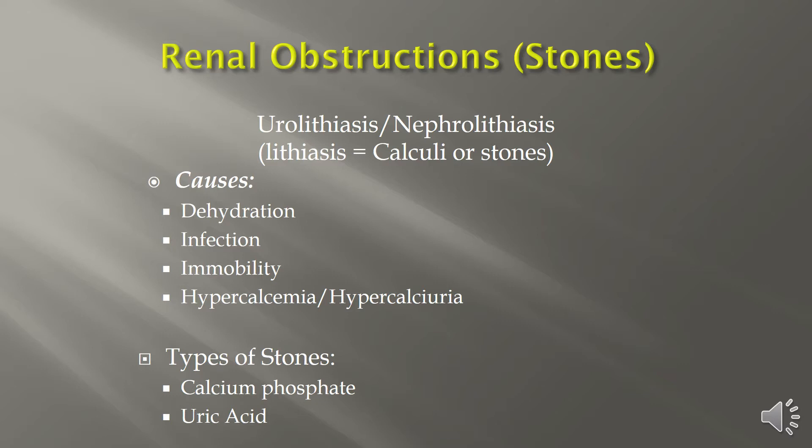There are two types of kidney stones. There are calcium phosphate or oxalate stones, which occur when either oxalate or calcium levels in the blood become severely high and build up in the urinary tract. Or they may be uric acid stones, so people with gout or increased uric acid are at higher risk for these stones.